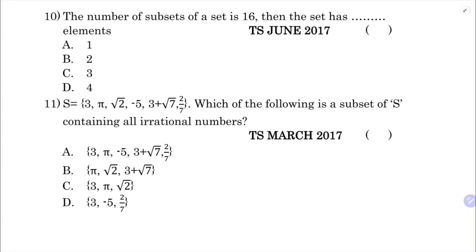Tenth question: the number of subsets of a set is 16. Using the formula 2 power n equals 16, so 2 power n equals 2 power 4, therefore n equals 4. There are 4 elements in the set, so the correct option is D.